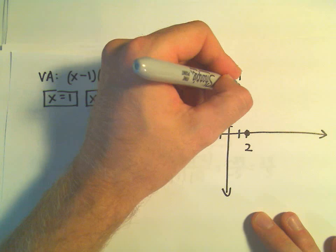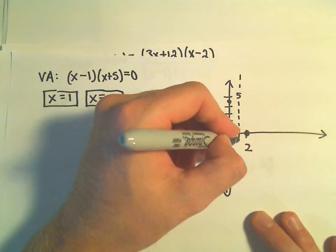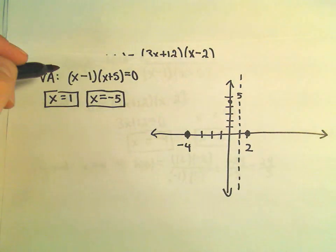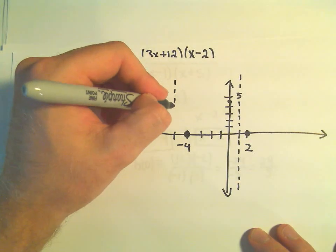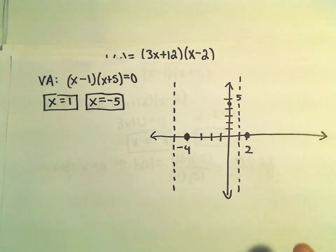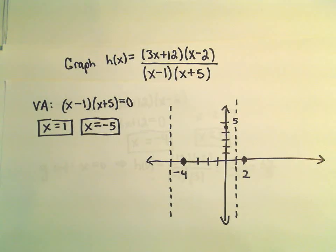So x equals positive 1. So let me stick a vertical asymptote right there. x equals negative 5. I'll stick a vertical asymptote over there. So we've got two vertical asymptotes in this case.